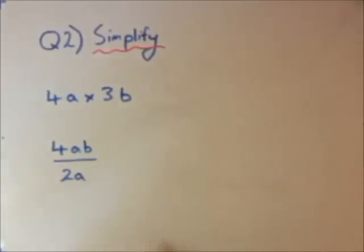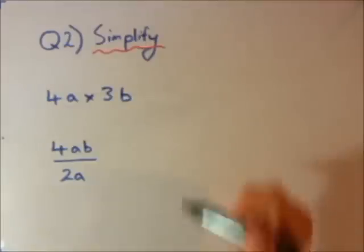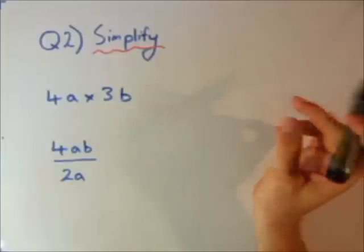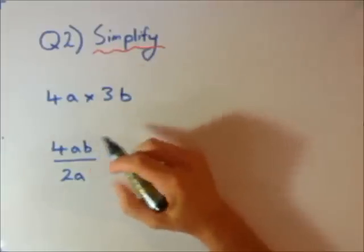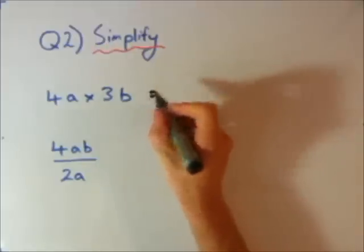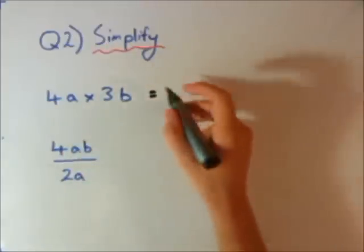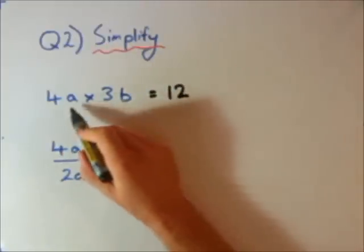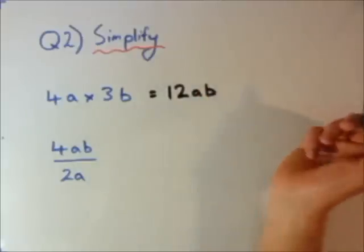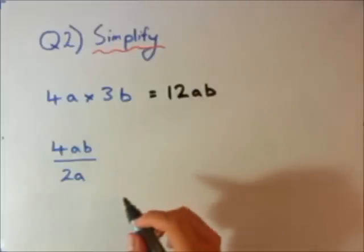Question 2, we're looking at simplifying pronumerals again. Unlike question 1 though, we're now looking at timesing and dividing. When you're timesing or dividing, you can just times the numbers and the letters. So the top one will be 4 times 3, I'll do the numbers first, 4 times 3 is 12. And then when you do a times b, it ends up just being ab.